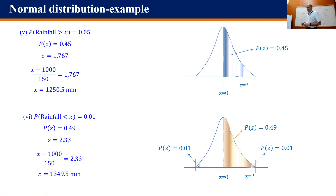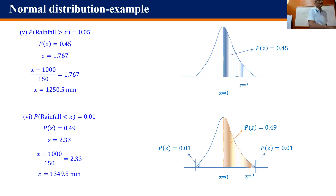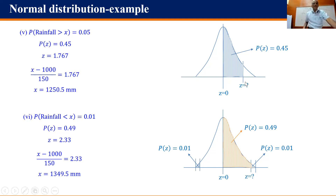P(Z) = 0.45 corresponds to Z = 1.645. Therefore (X - 1000)/150 = 1.645, giving X ≈ 1246.75 mm. So in a particular year, there is only a 5% chance rainfall exceeds approximately 1250 mm. For a 1% chance: P(Z) = 0.49, Z = 2.33, giving X = 1000 + 2.33 × 150 = 1349.5 mm.